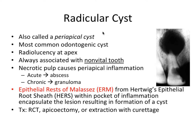First, we have the radicular cyst, also called a periapical cyst. It's the most common odontogenic cyst we're going to talk about in this video, so it's probably the most important one to know. Radiographically, it's a radiolucency at the apex of the root — this giant shadow here. It's around the apex, which is why it's also called a periapical cyst, and 'radicular' refers to its association with the root.